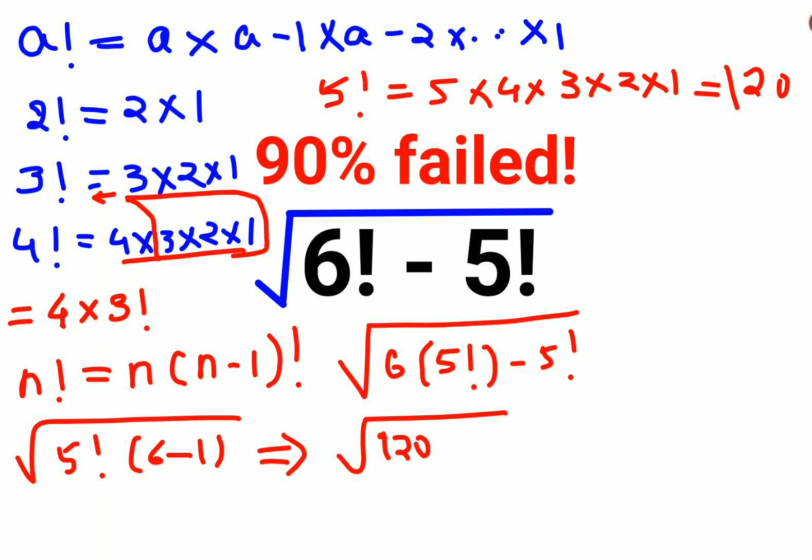And into 5. So 120 into 5 gets you the value of 600.